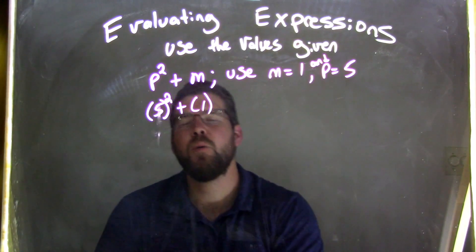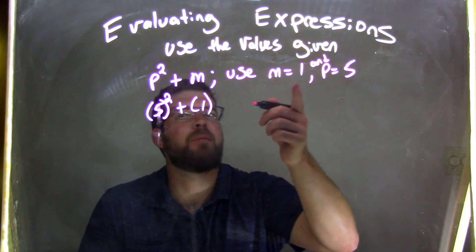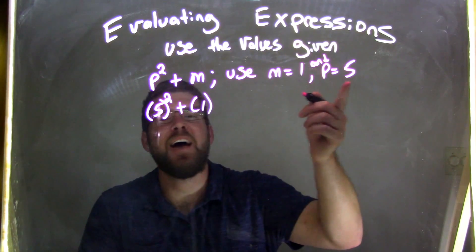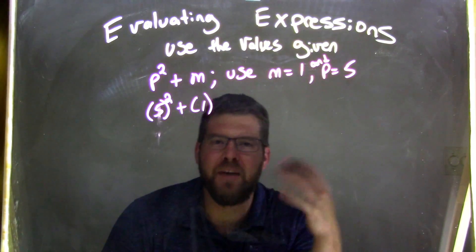Be careful, you should always double check that. I was testing you. m is 1, right there, and p is 5. Parentheses 5, then squared.